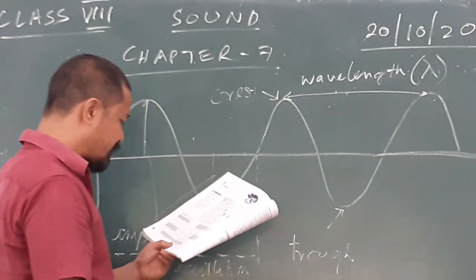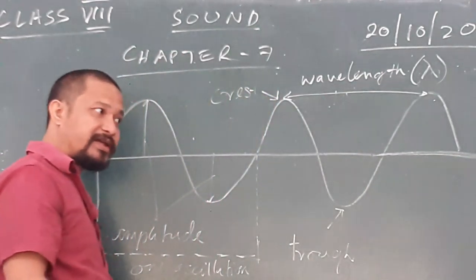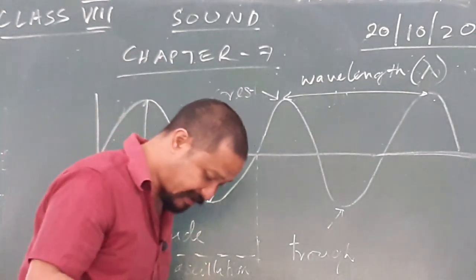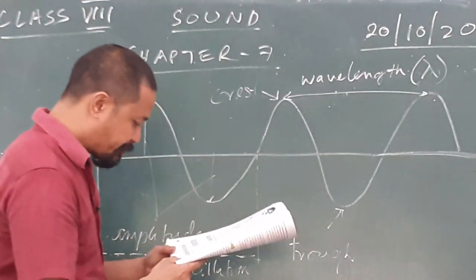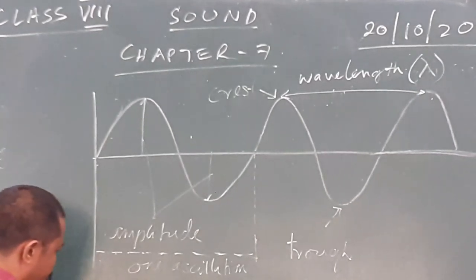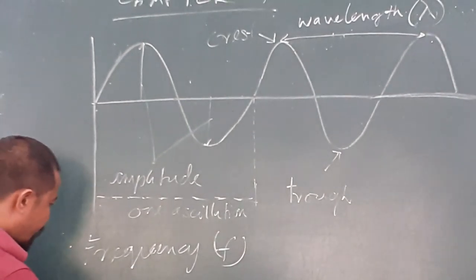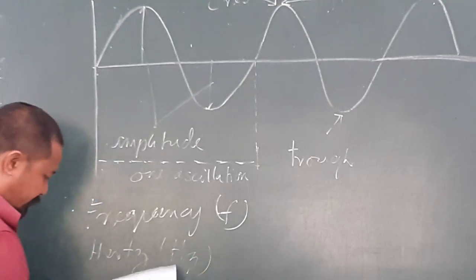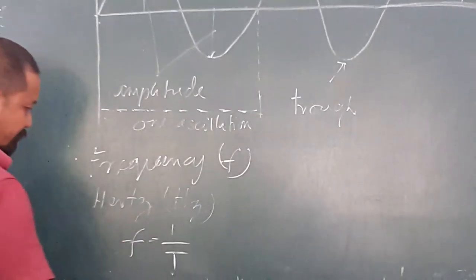Frequency: the frequency of a wave is the number of oscillations completed by it in one second. If the frequency is high, the number of waves completed in one second will be more. If the frequency is less, the number of waves produced in one second will be less. It is denoted by F, and its unit is hertz, written as Hz. The formula is: frequency F equals one upon time period T.